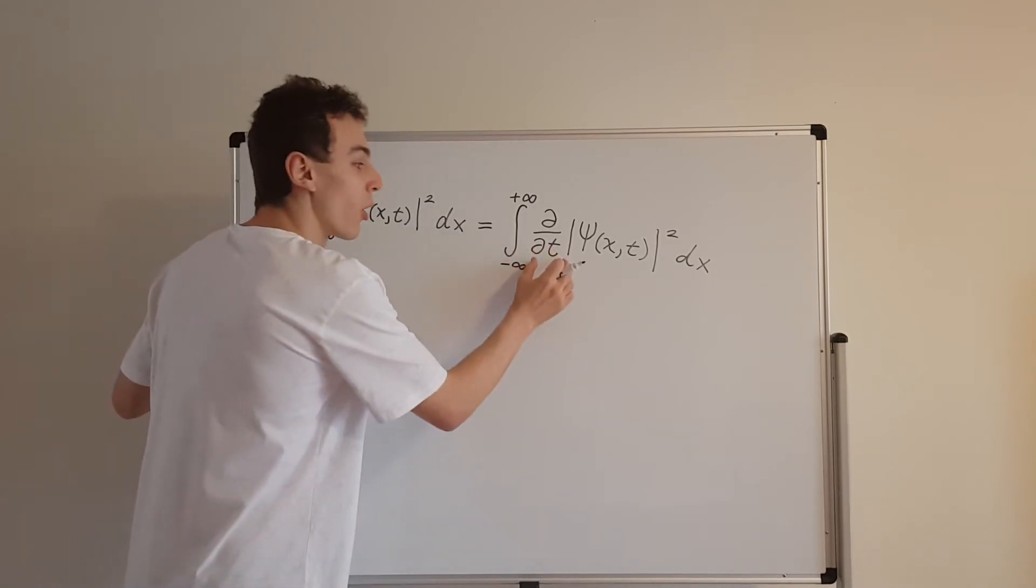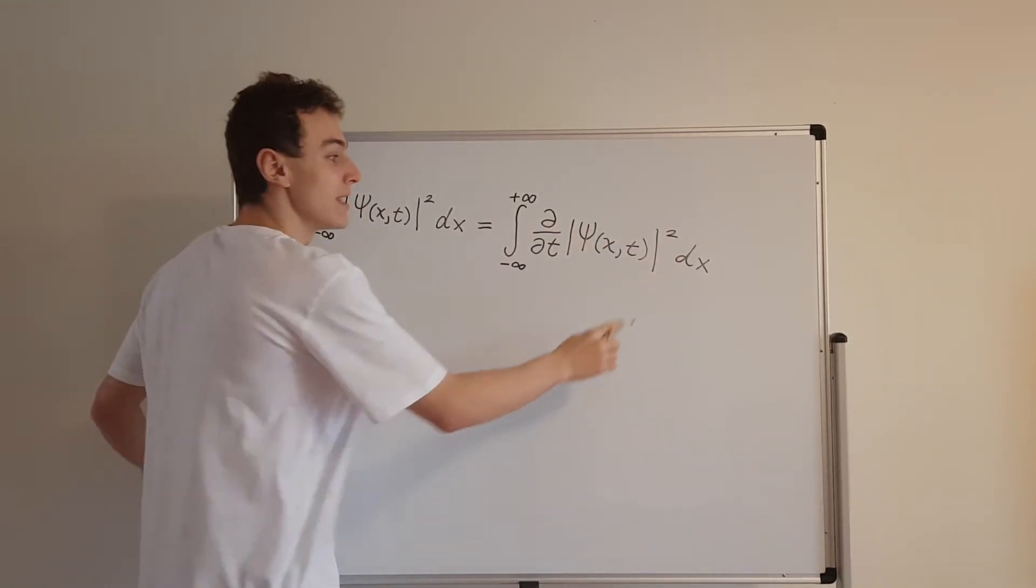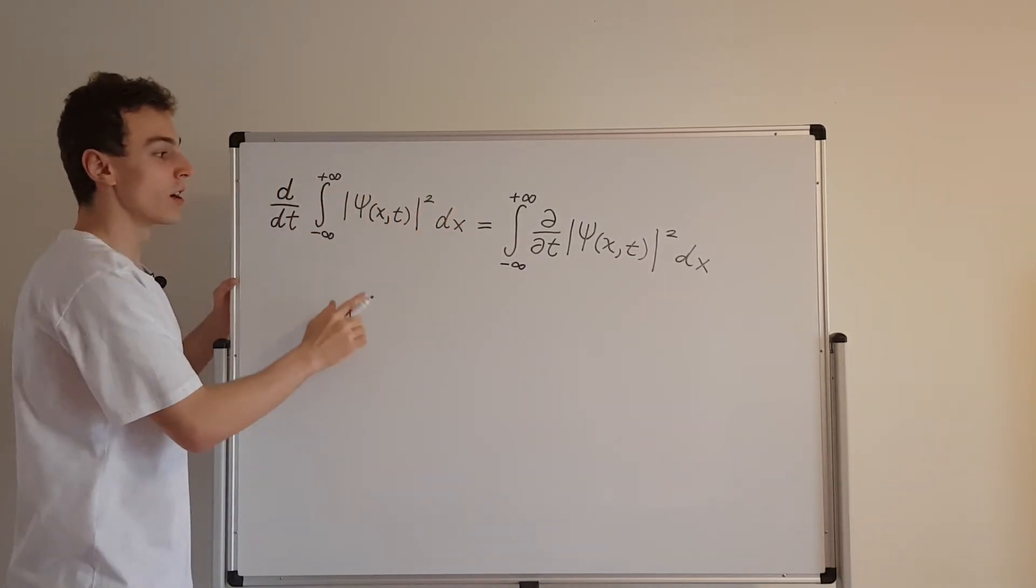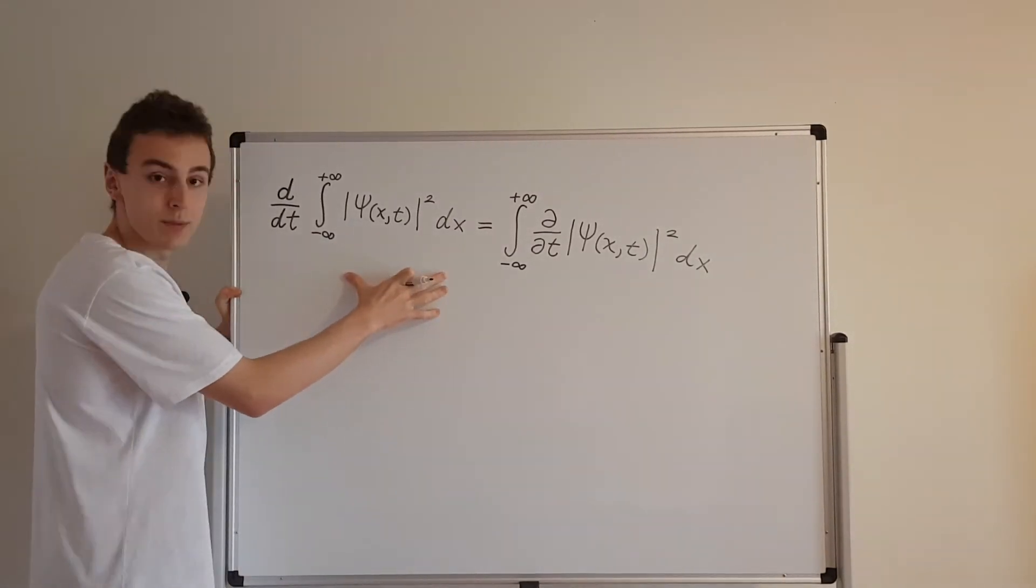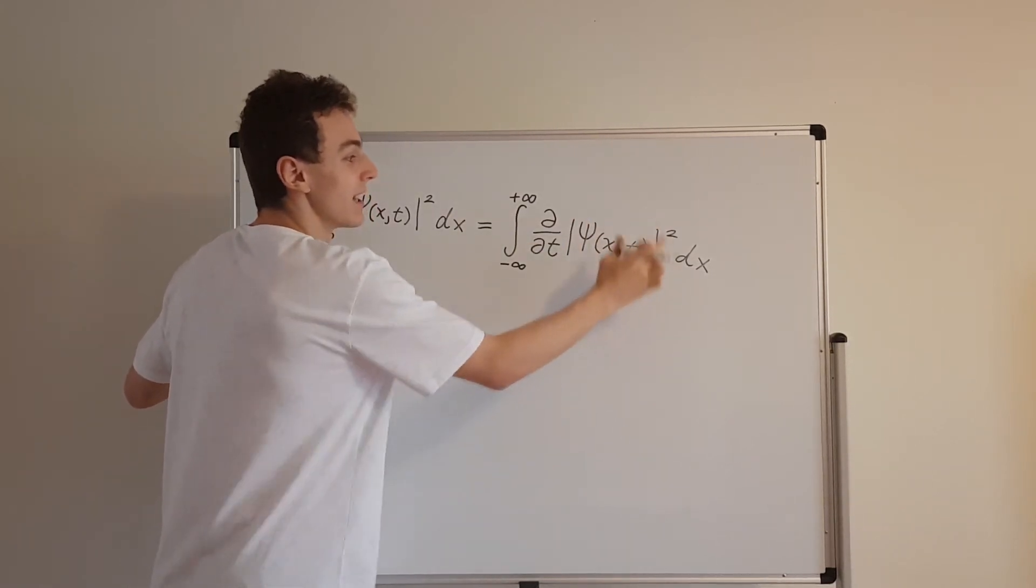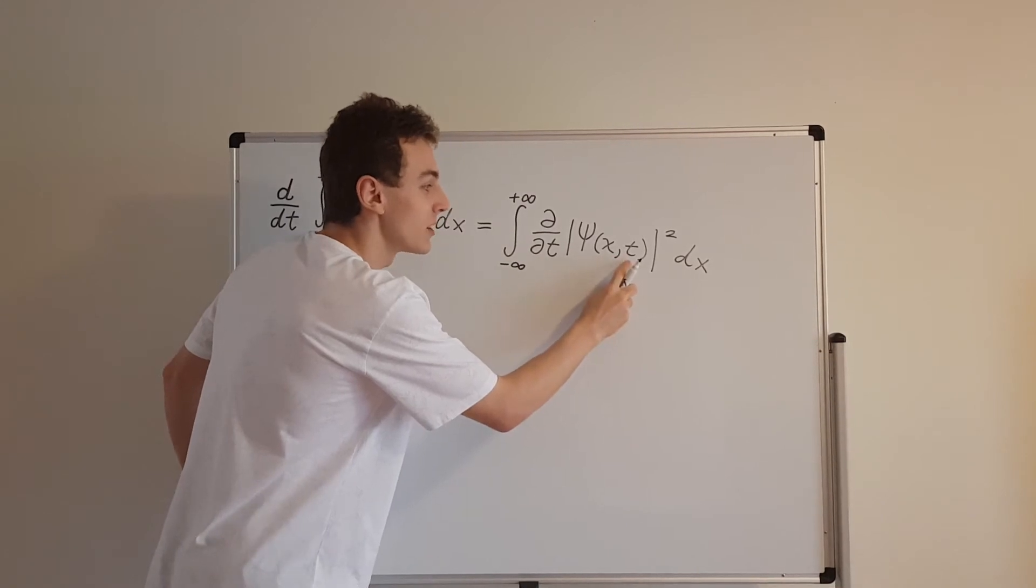But here what we have to do is we have to take a partial derivative because this integrand depends on x and t, whereas this integral only depends on t. So the integral is only time dependent. So we can take the total derivative, but the integrand, the thing that's inside the integral that has to be integrated, that depends on x and on t. So we have to take the partial time derivative.